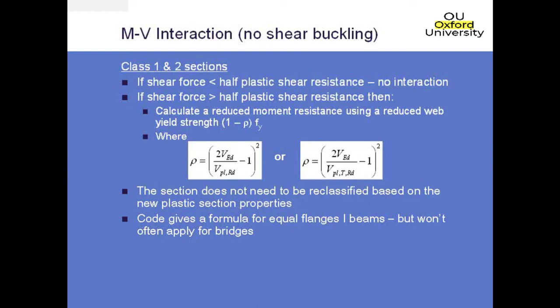However, once you've started reducing web thicknesses, you shouldn't then go back and reclassify the section. You should just use that section for this interaction only and don't redo any of the rest of the calculations. The code does give some simple formulae for equal flanges and simple I-beams, but it's not very often that you've got a symmetric beam in a typical bridge. That's more applicable for building design really.